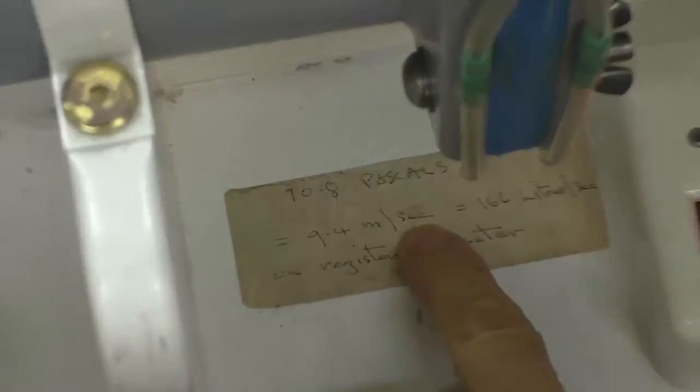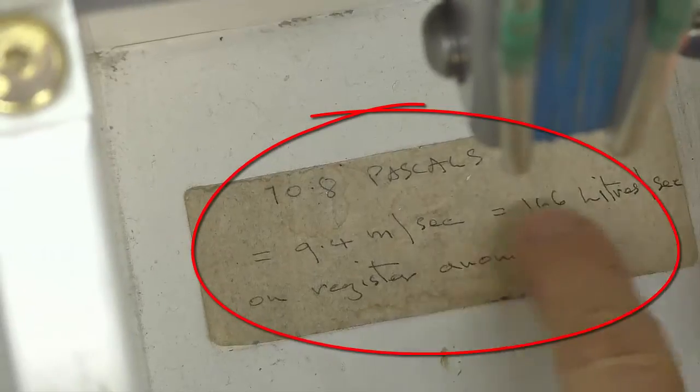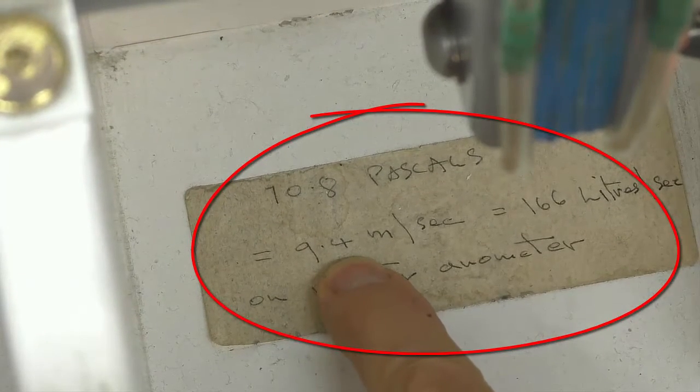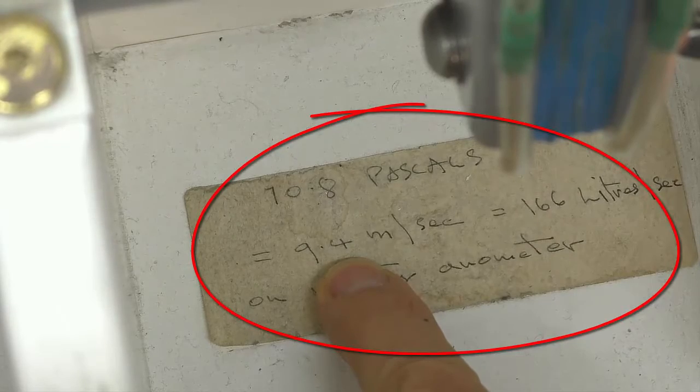We get 9.4 meters per second air velocity, 166 liters per second. Initially I'm going to use this 9.4 meters per second figure just to check the flow rate.